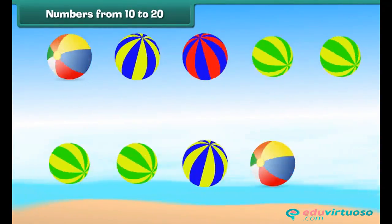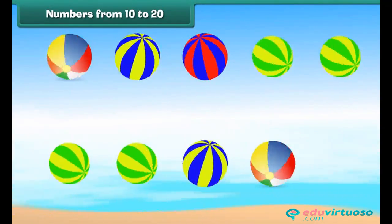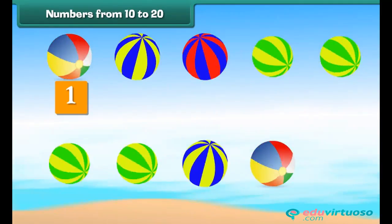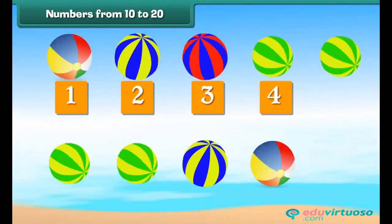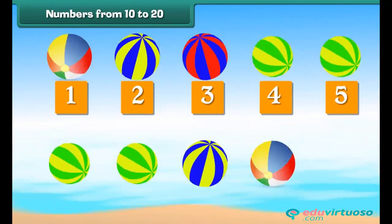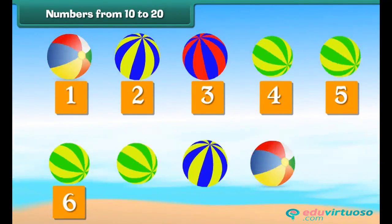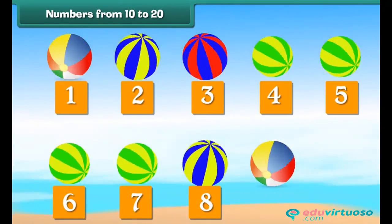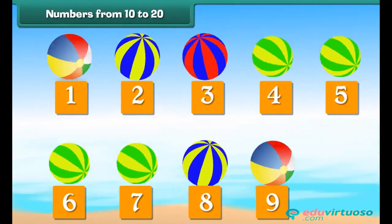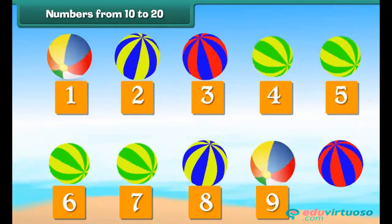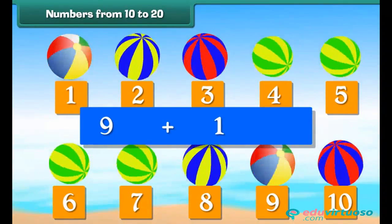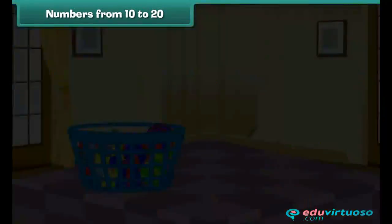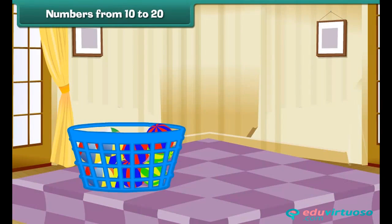Look at these colorful balls. Let us count them: 1, 2, 3, 4, 5, 6, 7, 8, 9. Let us add one more. We have 10 balls. 9 plus 1 is 10. Let us put these balls in a bucket. We now have a group of 10 balls.